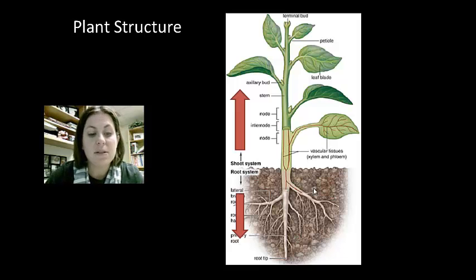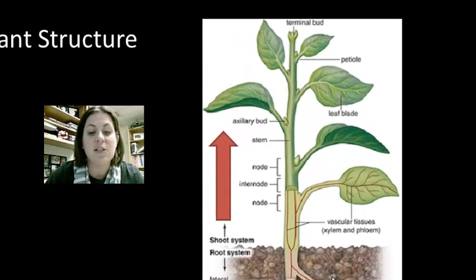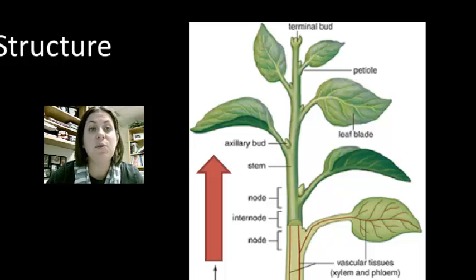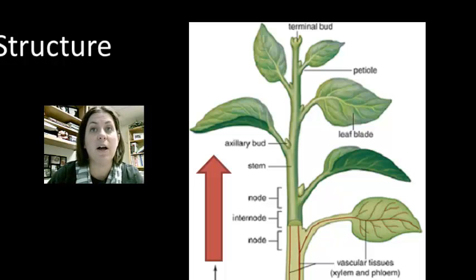Stems are the first organ we're going to discuss. They support the leaves and the flowers of the plant and also transport substances between the roots and the leaves — transporting water up but also transporting sugars down.